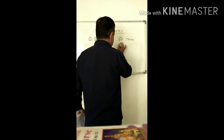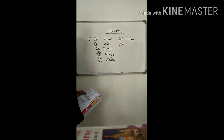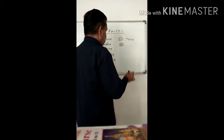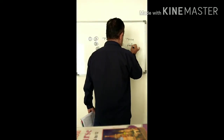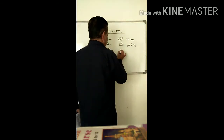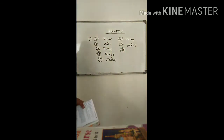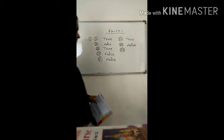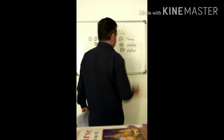7th part: This is false. 8th part: The point (-3, -2) lies in the 4th quadrant. This is false, because this is in the third quadrant.